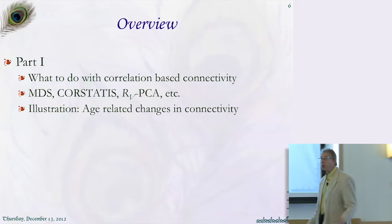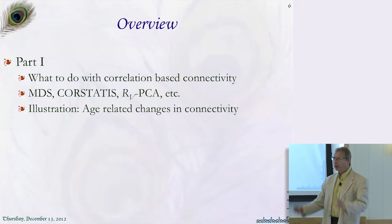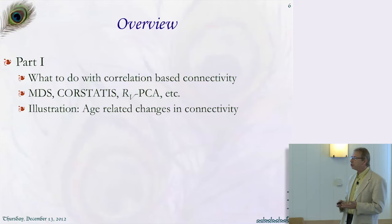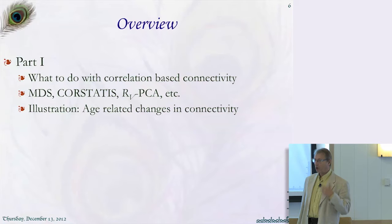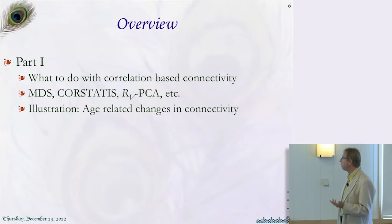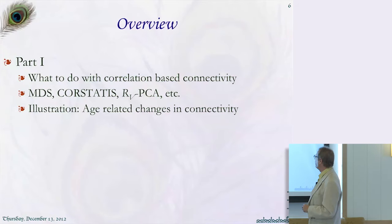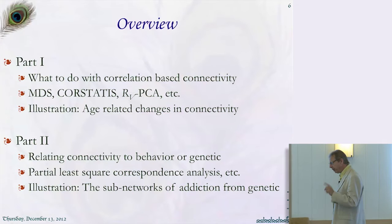As the title indicates, I'm going to talk about multi-table models for connectivity. You have probably heard about principal component analysis, where you try to understand the information in one table. If you have several tables like the ones used in PCA, you are in the case of multi-table analysis. In part one, I'll talk about what to do when our tables are made of correlation matrices — anything linked to the common information between two ROIs — and use Cheryl's data as an illustration on age-related changes in connectivity.